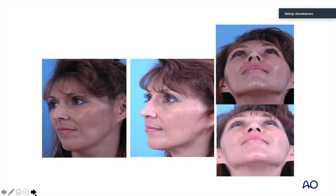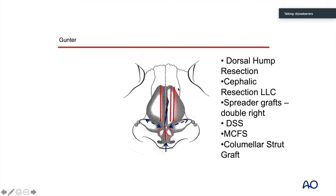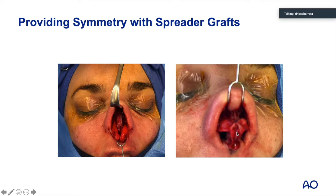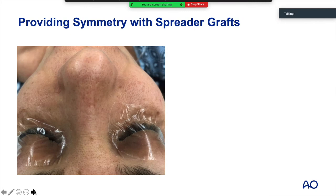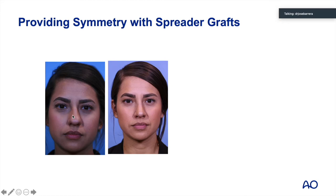Spreader grafts can also be used to provide symmetry. In patients with a more significant C-shaped deformity, a double spreader graft can be utilized. In this patient, a double spreader graft was placed on the left side, a single spreader graft on the other side, along with dome spanning sutures, a septal extension graft, and cephalic resection. After surgery, the nose is more symmetric, the C-shaped deformity is much improved, and the collapsed middle vault is improved.